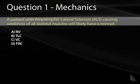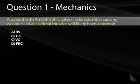A patient with ALS — amyotrophic lateral sclerosis, sometimes called Lou Gehrig's disease — has weakness of all skeletal muscles. We would expect him or her to likely have a normal: residual volume, total lung capacity, vital capacity, or FRC?